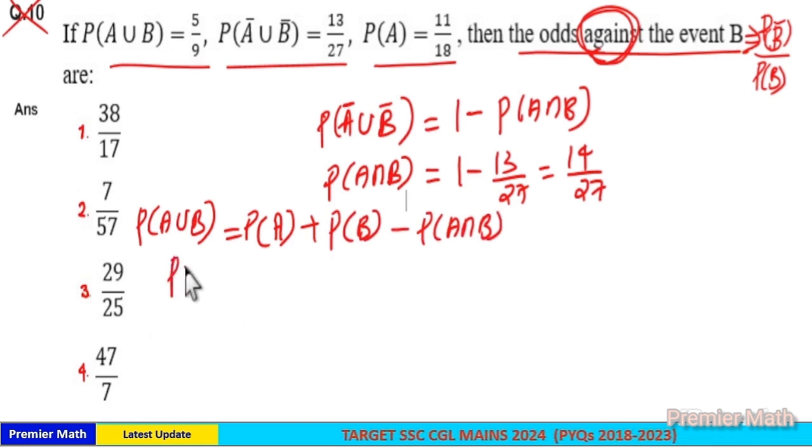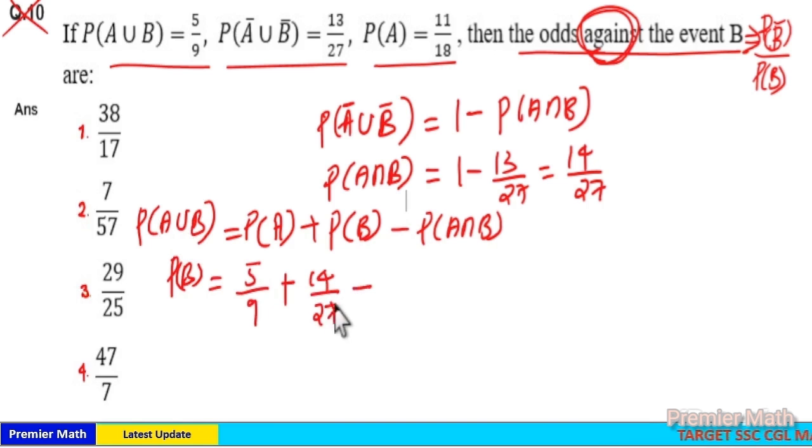From this we can find the value of probability of B which is equal to A ∪ B is 5/9 plus A ∩ B is 14/27 minus P(A) is equal to 11/18. Now 9, 27, 18 in the denominator. So 9 × 3 is 27, 9 × 2 is 18, 9 × 3 × 2 is LCM.